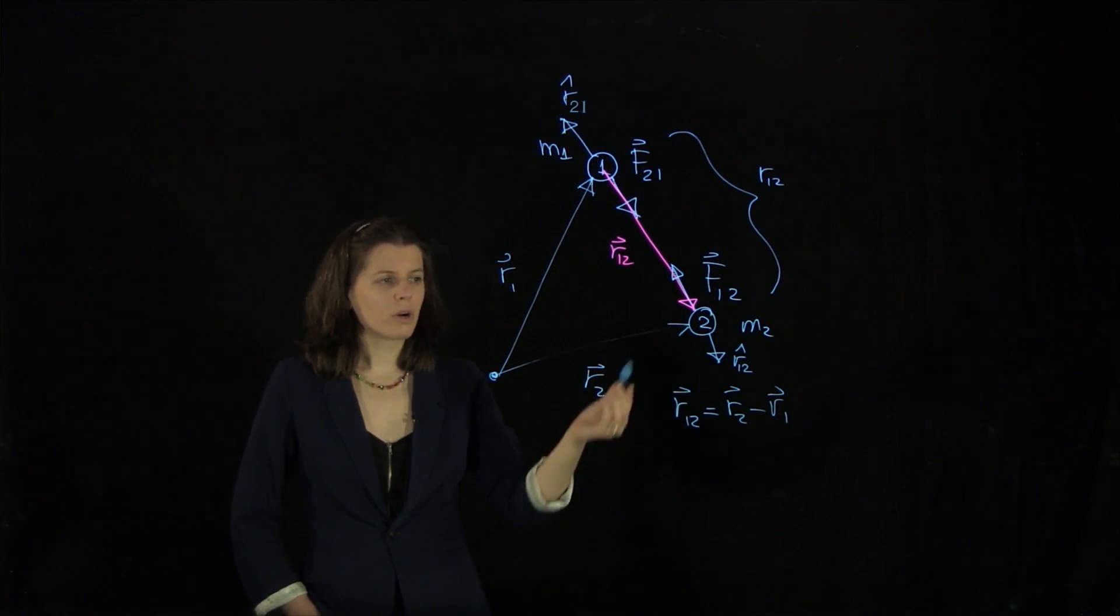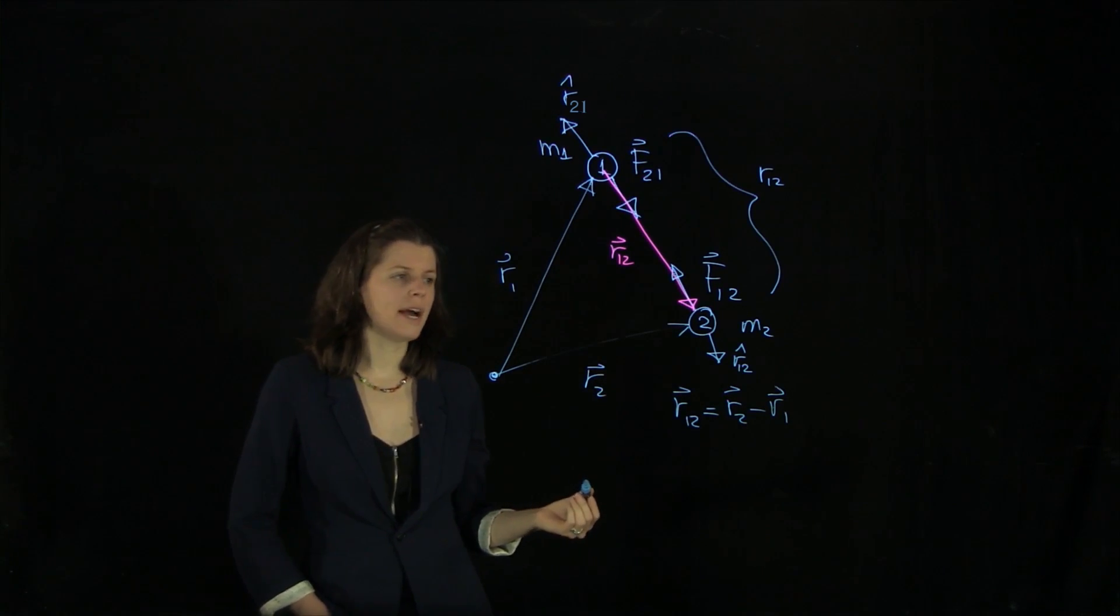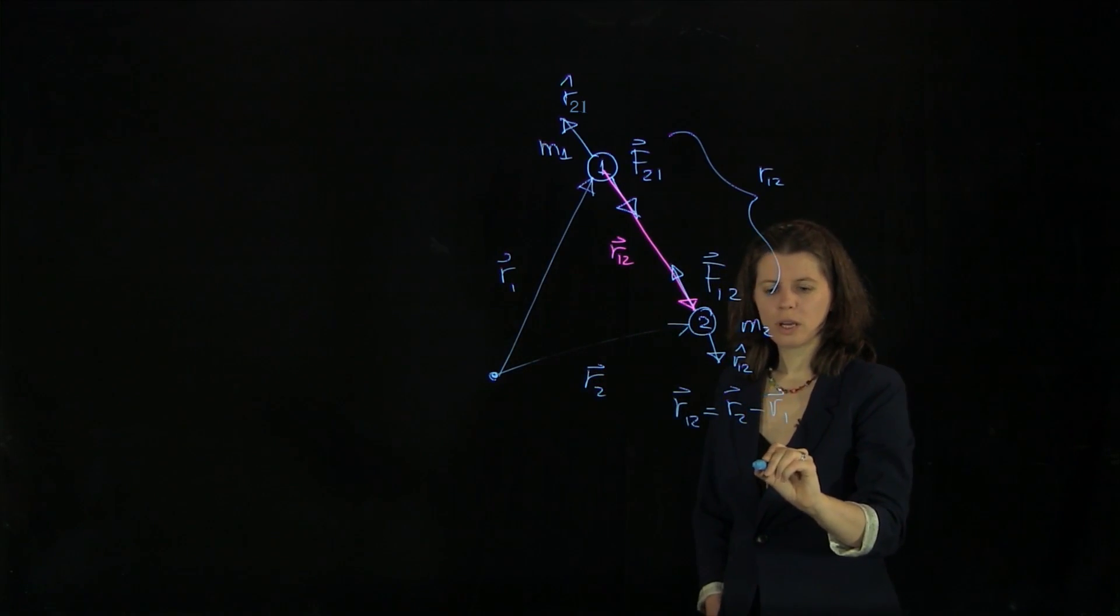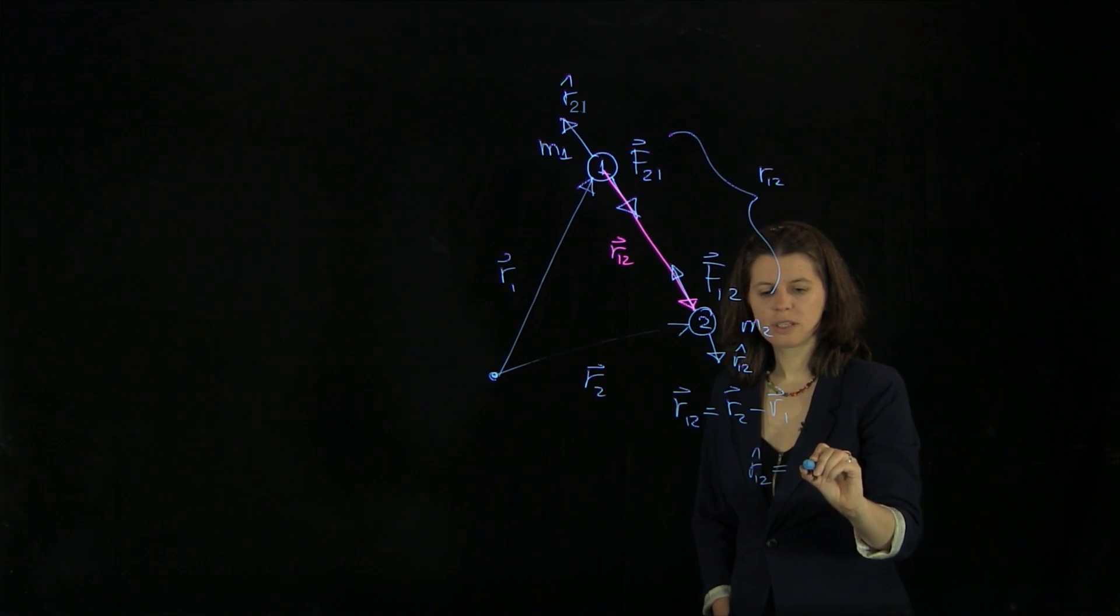And we're going to come back to the r-hat unit vectors later. For now, we can just write here quickly down the definition for a unit vector. So our r-hat one two is, of course, the vector itself, r12 divided over the magnitude of the vector. And we can write it like this.